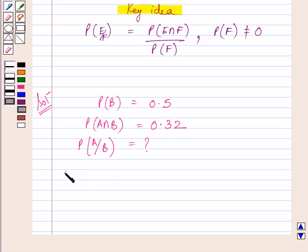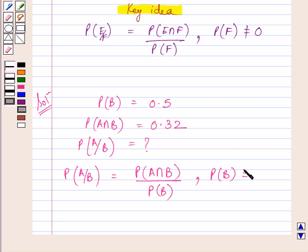Using the key idea, we know probability of A upon B is equal to probability of A intersection B upon probability of B, where probability of B is not equal to 0.